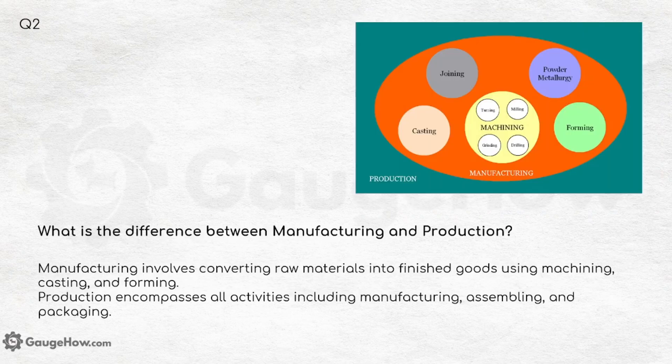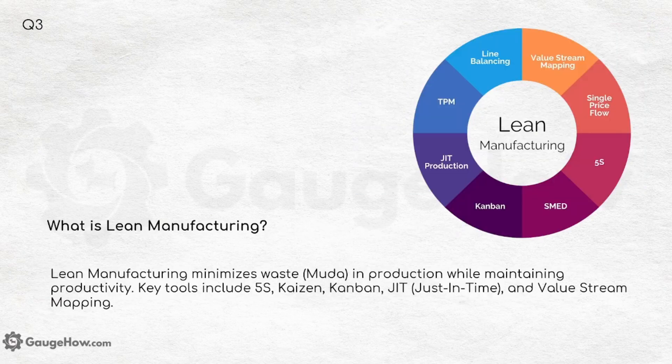What is the difference between manufacturing and production? Manufacturing involves converting raw materials into finished goods using machining, casting and forming, while production encompasses all activities including manufacturing, assembling and packaging. So basically manufacturing is just a small part of production technology.